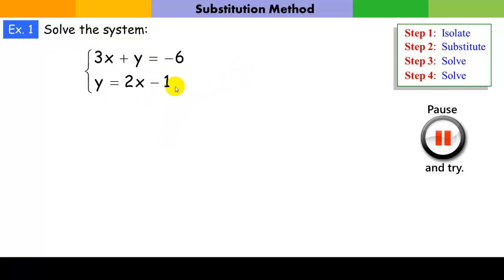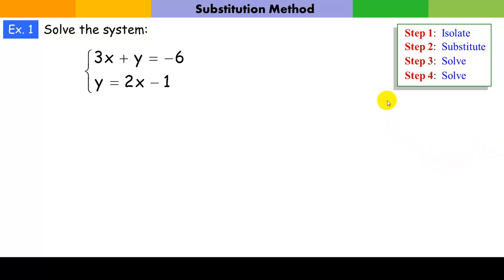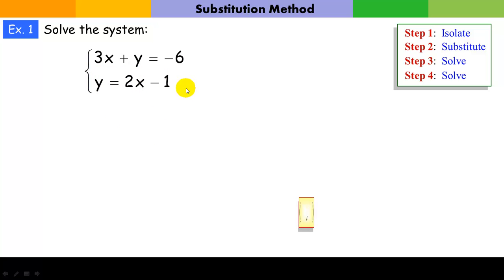Our first problem says solve the system, and here's our system. Here are our four steps. Go ahead and pause and try on your own if you'd like. Our first step is to isolate one of the variables. As I look here, I notice y is already alone — on this equation, it's already isolated. I have y alone on one side of the equation and 2x minus 1 on the other. So our first step is already done. Remember, our solution is going to be a point — an x and y value.